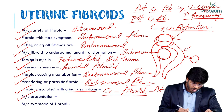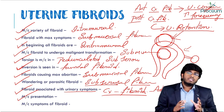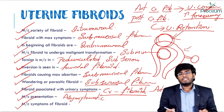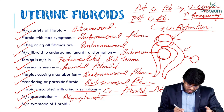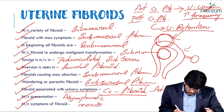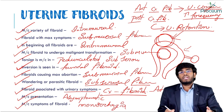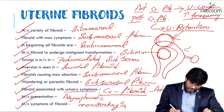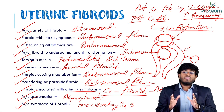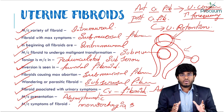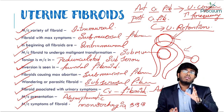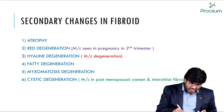Most of the time, uterine fibroids are asymptomatic. However, the most common symptom — when present — is menorrhagia, meaning too much blood loss during periods. This is the main reason females with fibroids come to the clinic: complaining of too much blood loss.